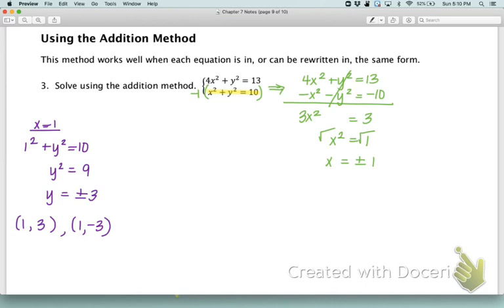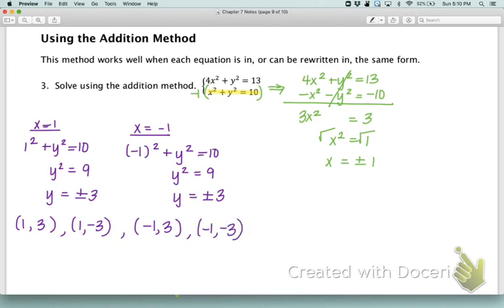Now we need to do the same thing with x equals negative 1. Negative 1 squared plus y squared equals 10. Negative 1 squared is also positive 1. So when we subtract, we get 9, and we get the same two possibilities, y equals plus or minus 3. But those are still two new solutions because it's a different x value. The ordered pairs are negative 1, positive 3 or negative 1, negative 3.